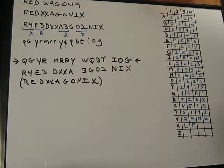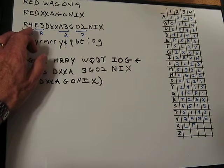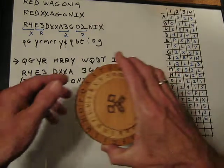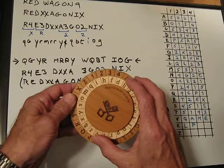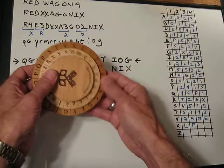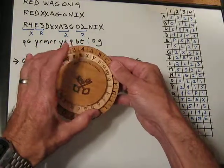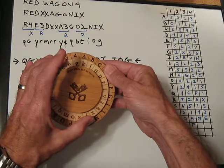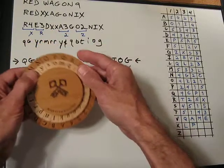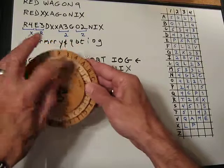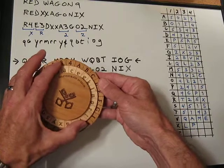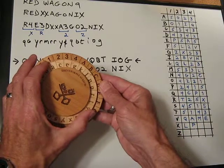Once we get done writing R4, we take our key — for most purposes I've always started off with the A over the K as our key, which is Alberti's favorite pointer. We write R4, which encodes as Q, and then 4 encodes as G. Now, in the old method we would rotate 4 positions over: 1, 2, 3, 4. But that's not what we're doing here with this new method.